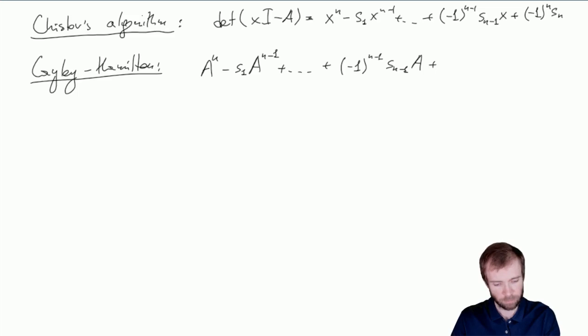The term before the last one will be this, and the last term would be minus 1 to the power of n times Sₙ. And here we need to have a matrix, so we put identity matrix. This should sum up to a null zero matrix.